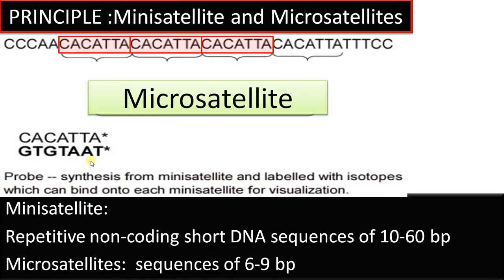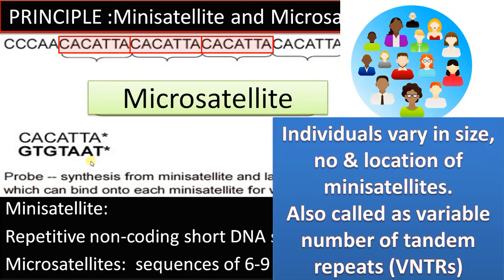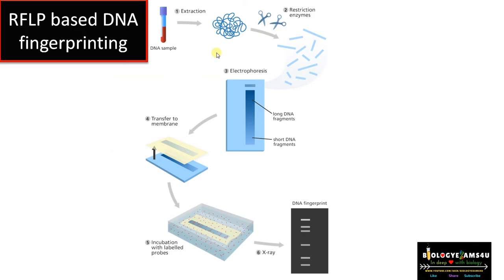Micro satellites are important because individuals vary in the size, number, and location of mini satellites or micro satellites. This is also called the variable number of tandem repeats (VNTR), as it differs between individuals. Each individual has a unique number, size, or location of mini satellites, allowing us to distinguish individuals based on their distribution in the genome.